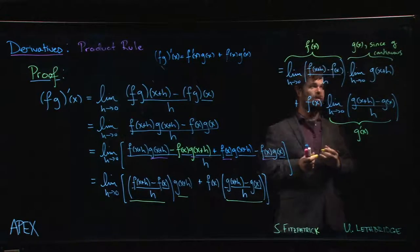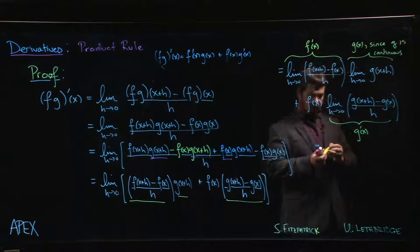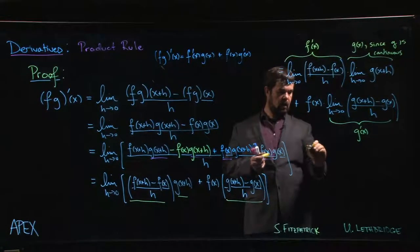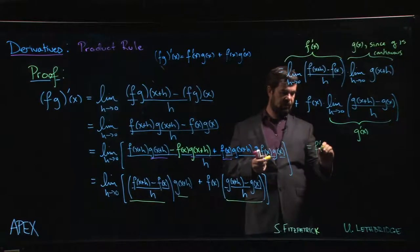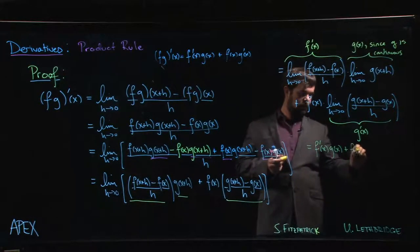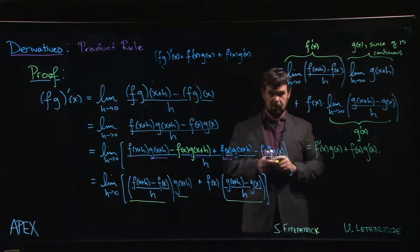And so this is g of x, and the reason is that g is continuous. If we didn't know g is continuous we wouldn't necessarily be able to make that leap, but because we know it we're good to go. And we get our result: f prime of x times g of x plus f of x times g prime. And there's our product rule.